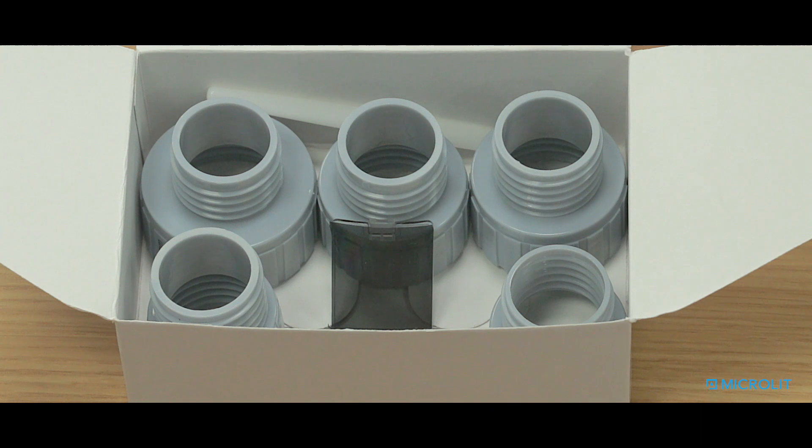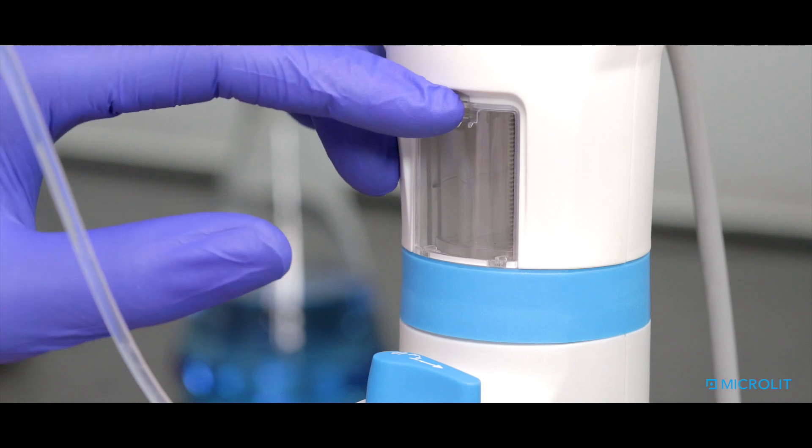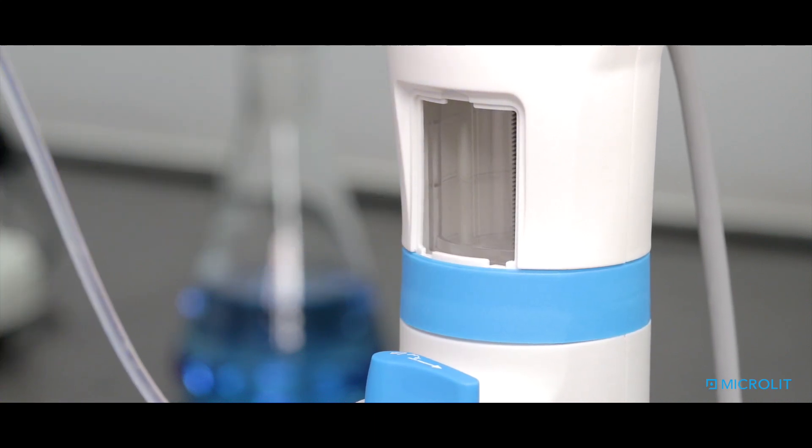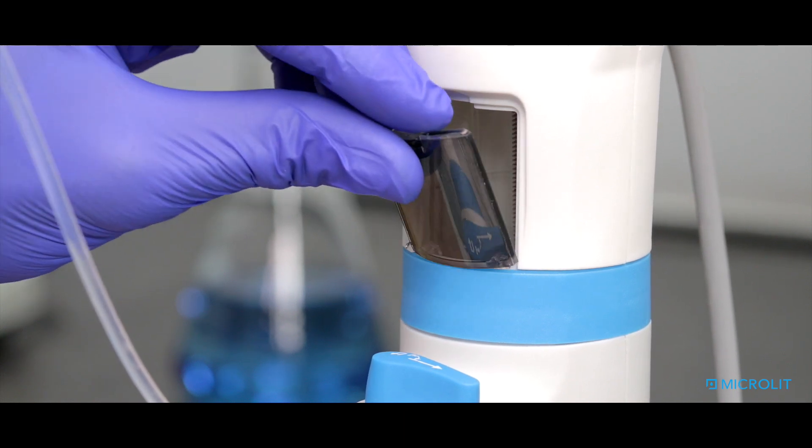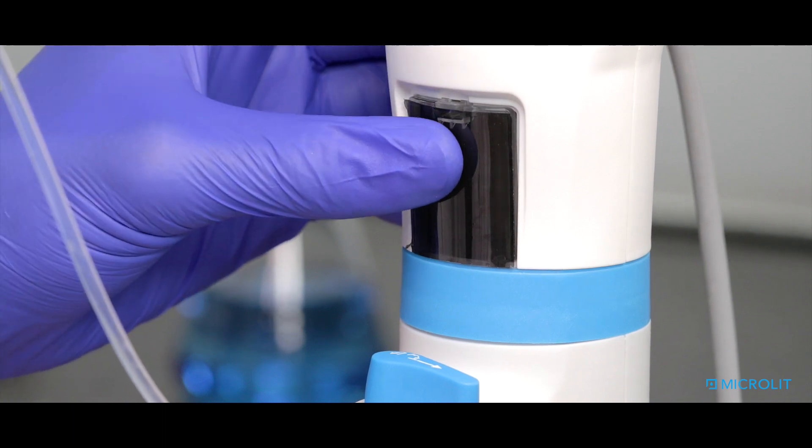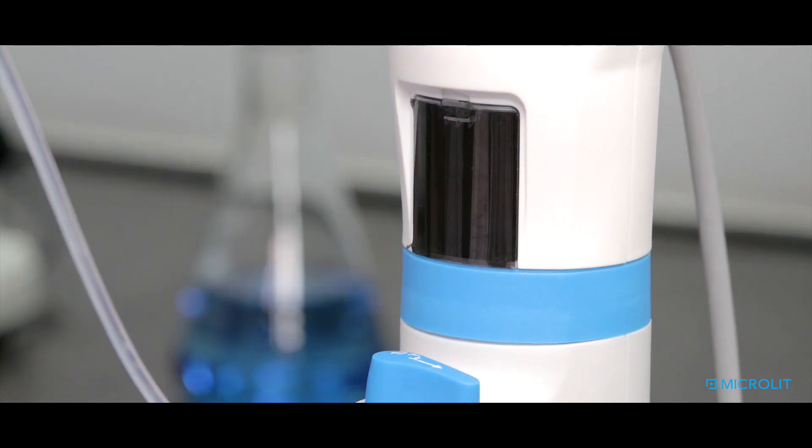For light-sensitive media, Microlit also offers an amber-colored window. Simply unclip the default inspection window by pressing it from its top and remove. Now place the amber-colored window in the slot provided at the bottom of the housing and press it down until you hear a click sound.